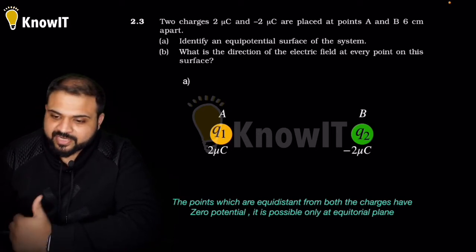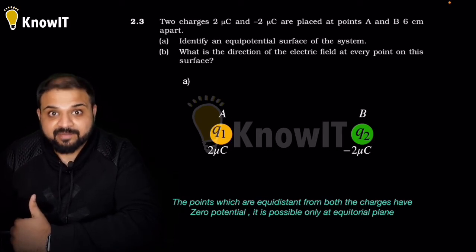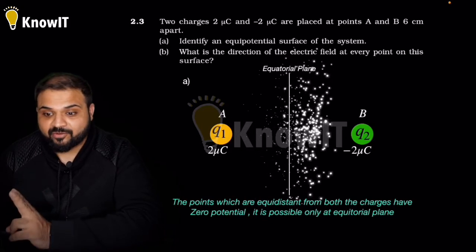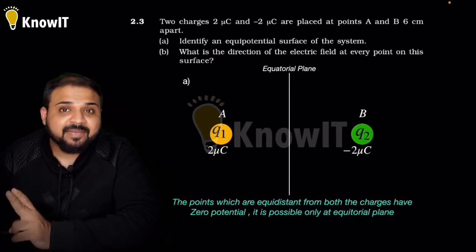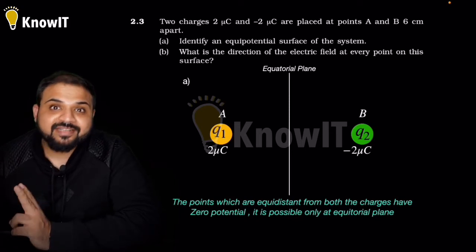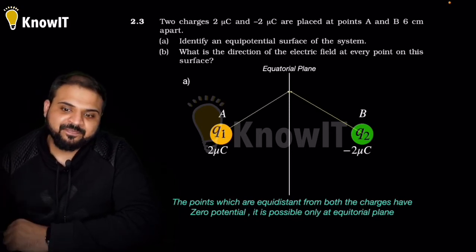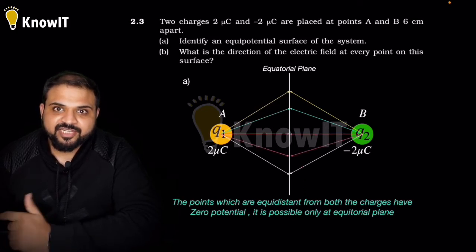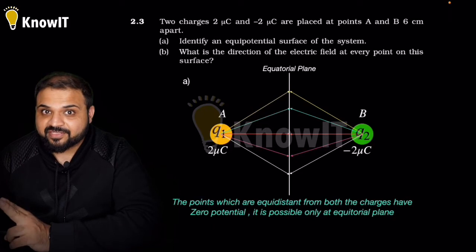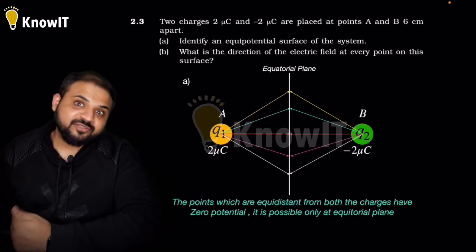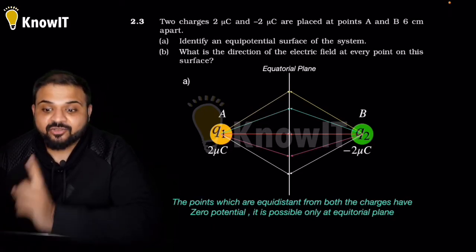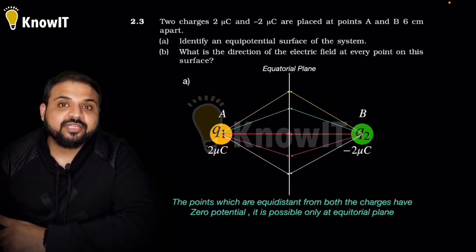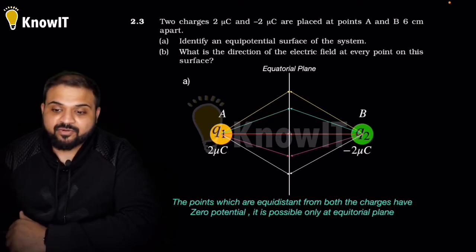Logically, this is a dipole pair. A dipole has two planes — an axial plane and an equatorial plane. The equatorial plane contains points that are equidistant from both charges. When you add the potentials at any point on the equatorial plane, one charge's potential cancels the other. So the equatorial plane always has zero potential, and this equatorial plane is our answer.